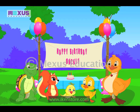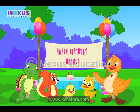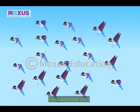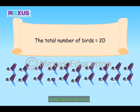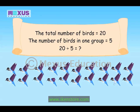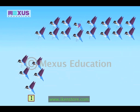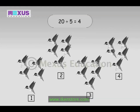Now I got it. It was so simple. And now, I am giving you another division problem. Look at those birds in the sky. They fly in groups of 5. Can you use division to tell me how many groups they will form? The total number of birds is 20. The number of birds in one group is 5. We divide 20 by the group of 5 birds. So, 20 divided by 5 is 4.